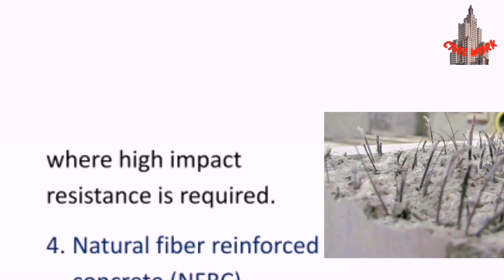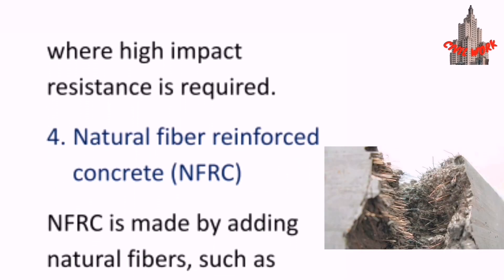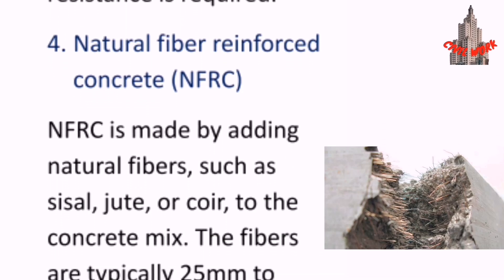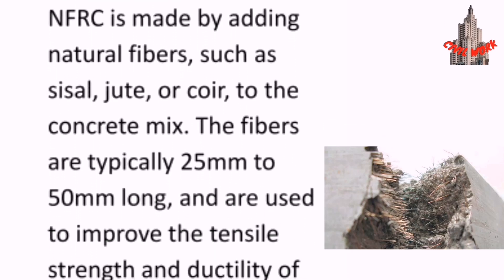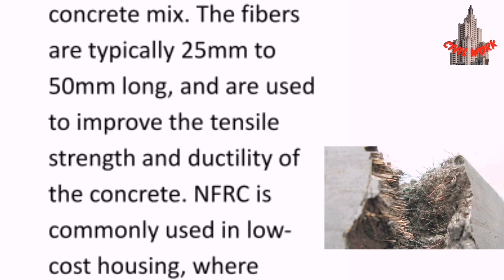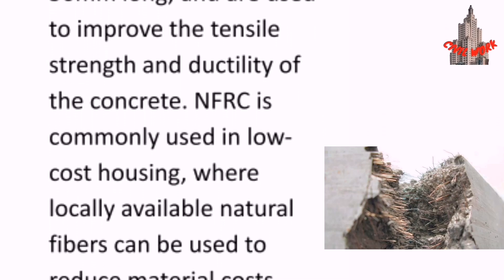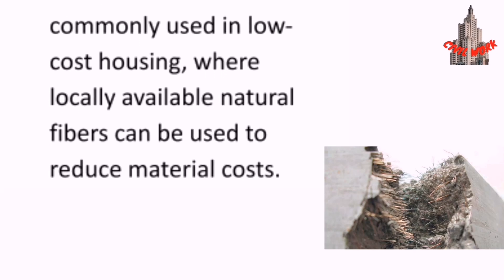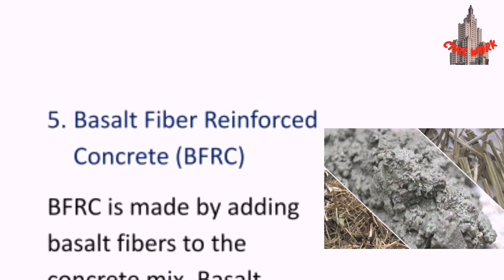Natural fiber-reinforced concrete is made by adding natural fibers such as sisal, jute, or coir to the concrete mix. The fibers are typically 25 mm to 50 mm long and are used to improve the tensile strength and ductility of the concrete. Natural fiber-reinforced concrete is commonly used in low-cost housing where locally available natural fibers can be used to reduce material costs.